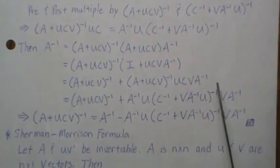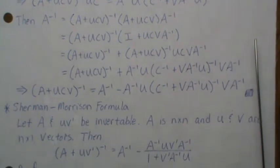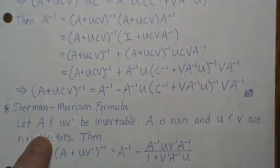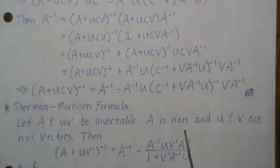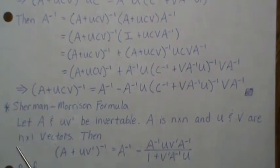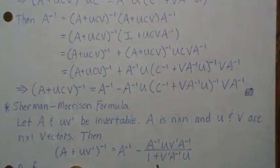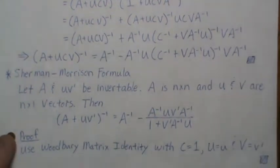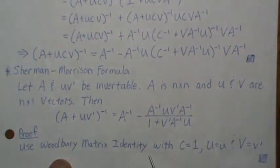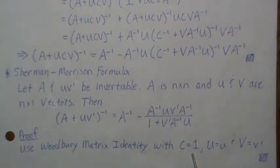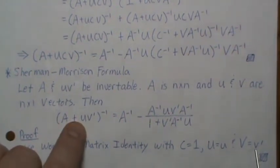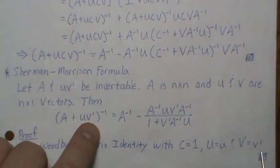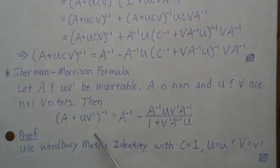Now the Sherman-Morrison formula is a special case of the Woodbury identity. It states that if A is an n-by-n matrix and u and v are n-by-one vectors, then a certain inverse result holds. The proof uses the Woodbury matrix identity with C equal to the scalar one, capital U equal to little u (the vector), and capital V equal to v-transpose. Then it holds and that's essentially trivial when you do the algebra.